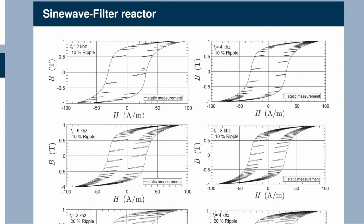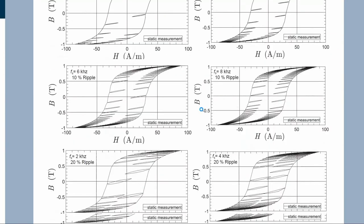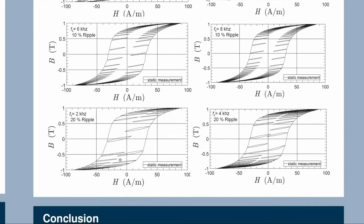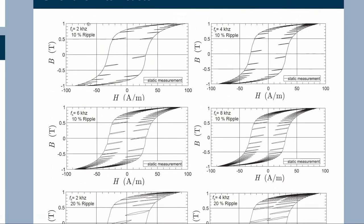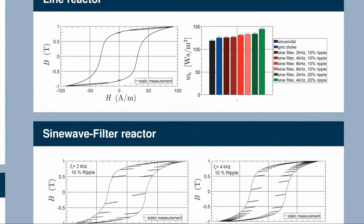The ripple also has influence: when the ripple increases, the area of every single minor loop increases. When the switching frequency increases, the number of minor loops increases. For these conditions and this application, the hysteresis energy loss density will increase.